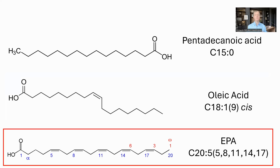C15 has been proposed as an essential fatty acid. For comparison, here is EPA, an omega-3 fatty acid. It is called omega-3 as the first double bond is the third from the end without the carboxyl group. These bonds make the molecule curl in a U-shape, and when EPA is incorporated into cells, it does in fact make them more flexible.